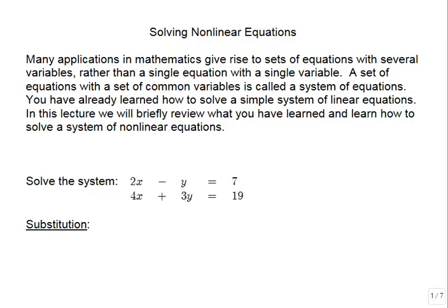So let's take the system 2x minus y equals 7 and 4x plus 3y is equal to 19. This is called a 2 by 2 system because it has two variables x and y and two equations.